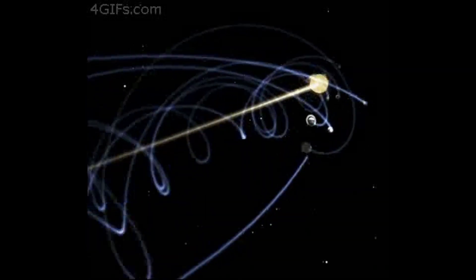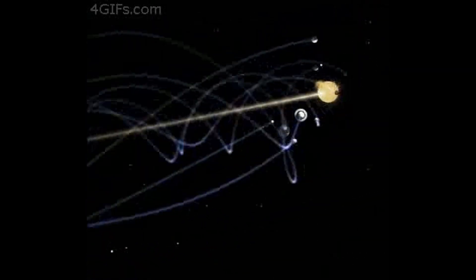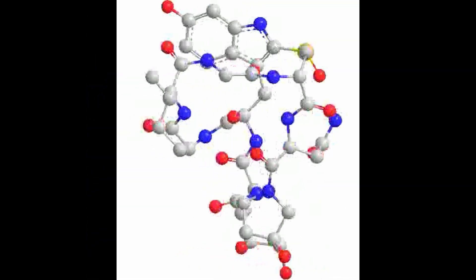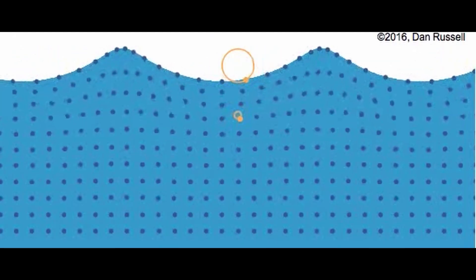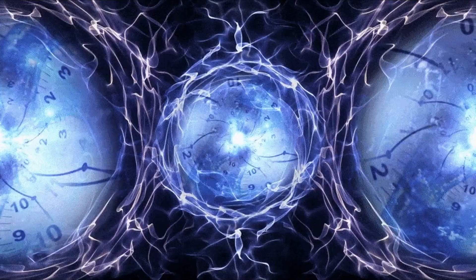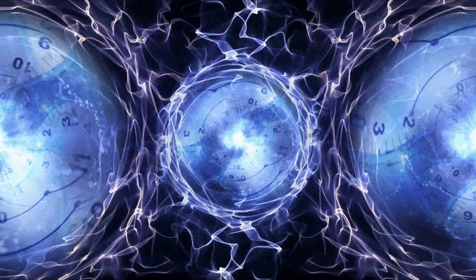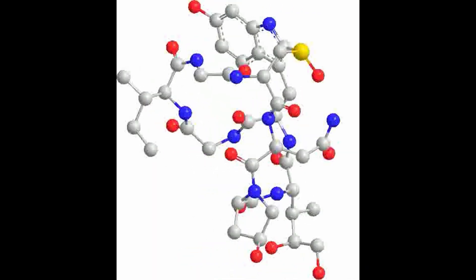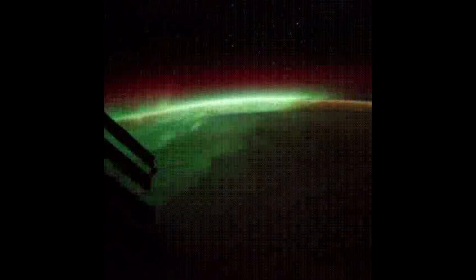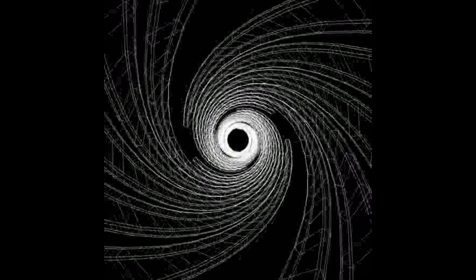According to the inflationary model, the universe underwent a brief period of exponential expansion shortly after the Big Bang, driven by a repulsive force called the inflaton field. This theory explains some of the puzzles of the Big Bang theory, such as the flatness, horizon, and monopole problems. According to this theory, the entropy of the universe increased dramatically during inflation, because the inflaton field decayed into a large number of particles and radiation, creating a very high entropy state. However, the entropy did not increase as much as it could have, because some energy was converted into order and complexity, such as quantum fluctuations, density perturbations, and gravitational waves.